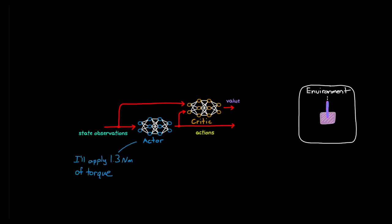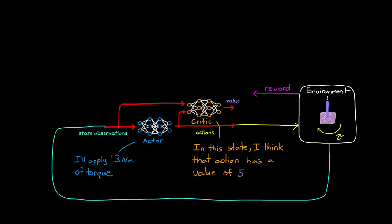Here's how it basically works. The actor chooses an action in the same way that a policy function algorithm would, and it's applied to the environment. The critic estimates what it thinks the value of that state and action pair is, and then it uses the reward from the environment to determine how accurate its value prediction was. The error is the difference between the new estimated value of the previous state and the old value of the previous state from the critic network.